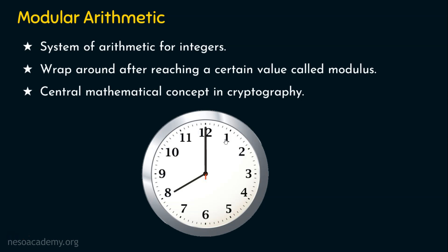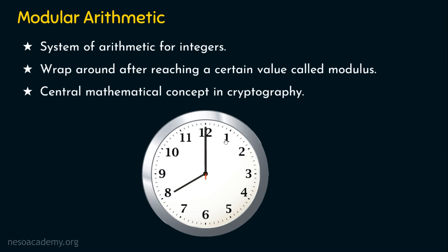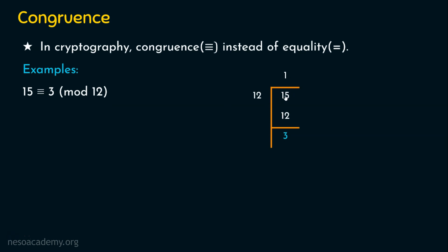Before seeing more examples, let's understand congruence. In cryptography, congruence is used and is represented with a special symbol instead of equality. For example: 15 is congruent to 3 mod 12. Since the modulus is 12, when 15 is divided by 12 — 1 times 12 is 12 and the remainder is 3. So 15 hours means 3 PM, and 15 is congruent to 3 mod 12.